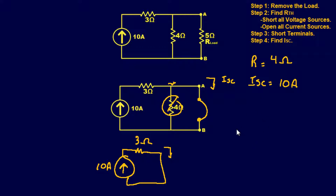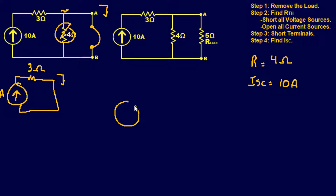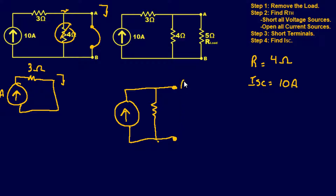So now we can find our Norton equivalent circuit with those two values. Our Norton equivalent circuit has a 10-amp current source in parallel with a 4-ohm resistance, between points A and B. This is our final answer for the Norton equivalent circuit.